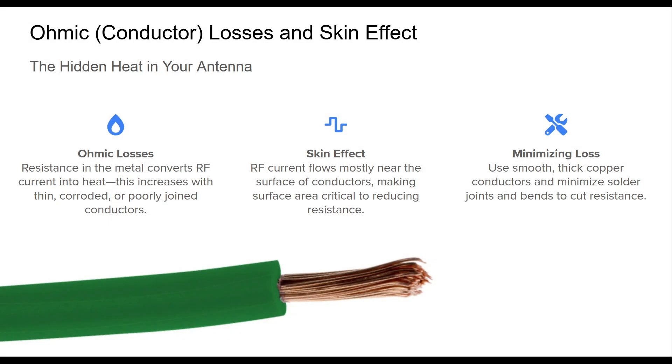Ohmic losses arise from the basic electrical resistance of materials in your antenna. As RF current flows, this resistance converts some of the energy into heat, reducing efficiency. This effect becomes more significant with thinner, rougher, or corroded wires. A major contributing factor is the skin effect, a phenomenon where high-frequency currents travel mainly on the surface of conductors. Based on this, the effective conductive area is much smaller than the cross-section of the wire, especially at HF and above. To combat these losses, engineers use large-diameter, smooth copper conductors, avoid unnecessary connections, and place coils or matching networks outside the radiation path where possible.